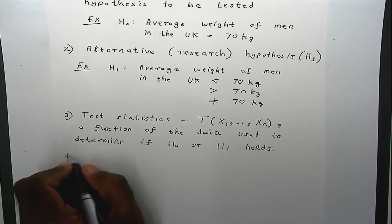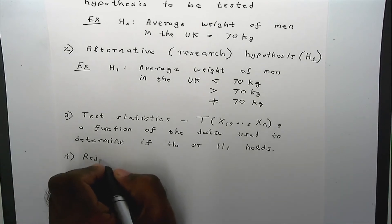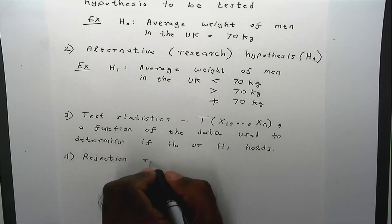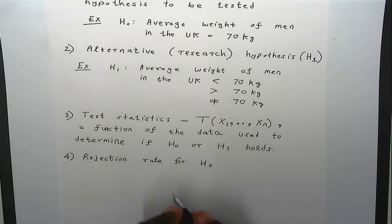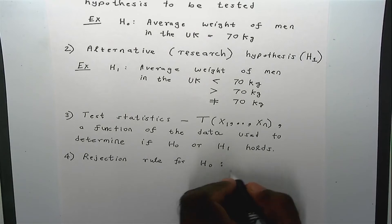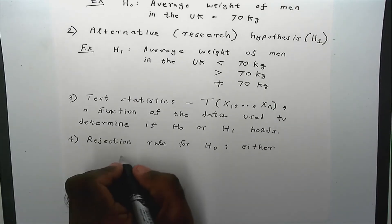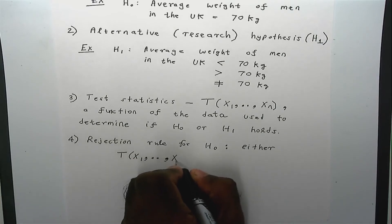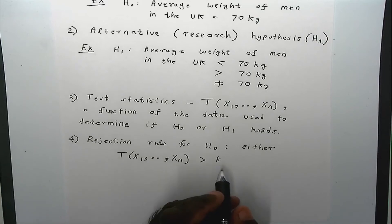The fourth element is the rejection rule — the rule for rejecting the null hypothesis. It takes one of the two following forms: either the test statistic is greater than a constant K, or it takes another form.